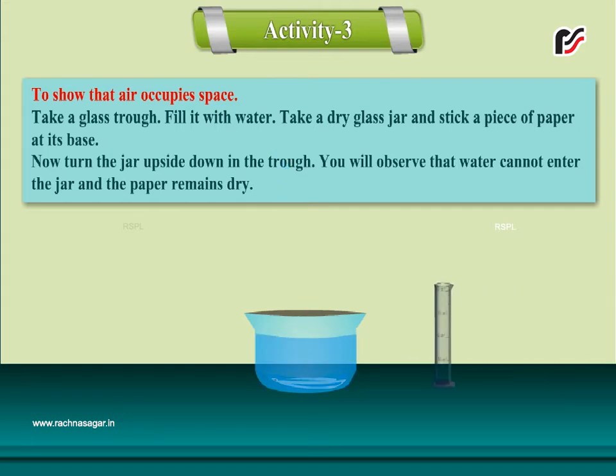Take a dry glass jar and stick a piece of paper at its base. Now turn the jar upside down in the trough. You will observe that water cannot enter the jar and the paper remains dry.